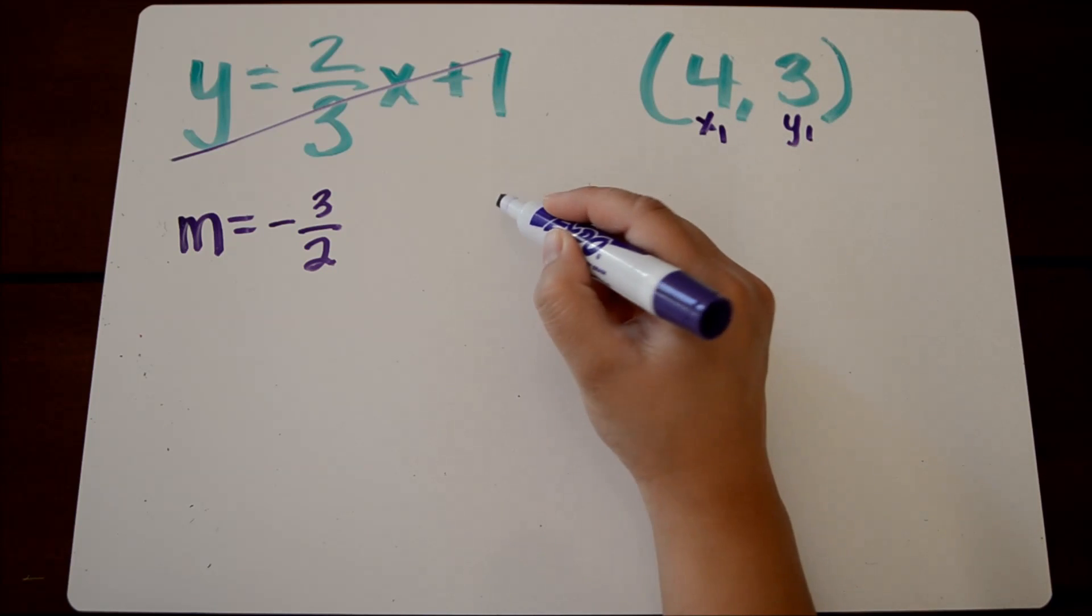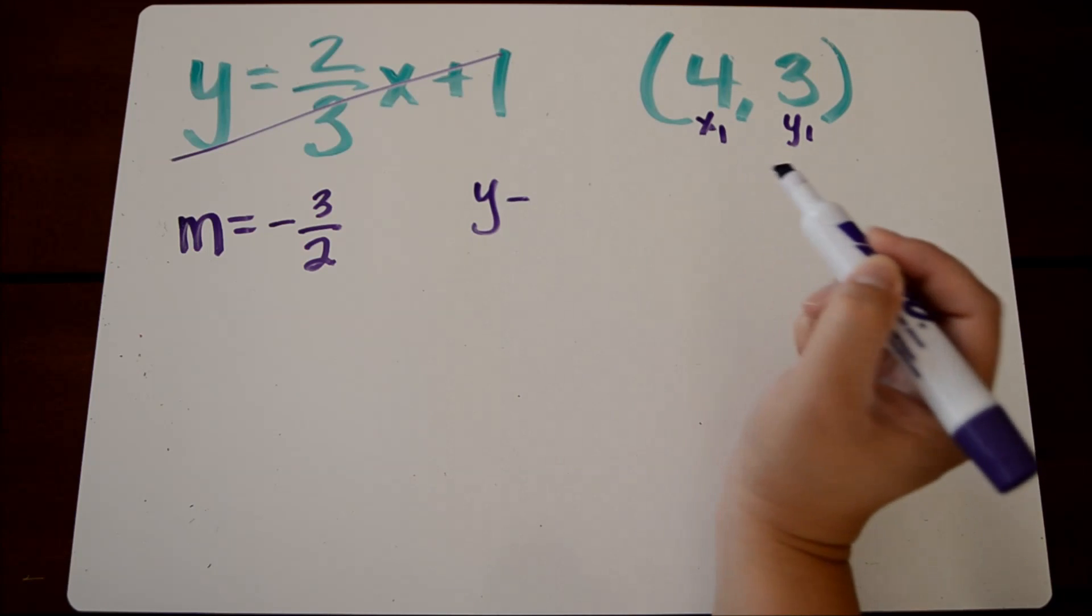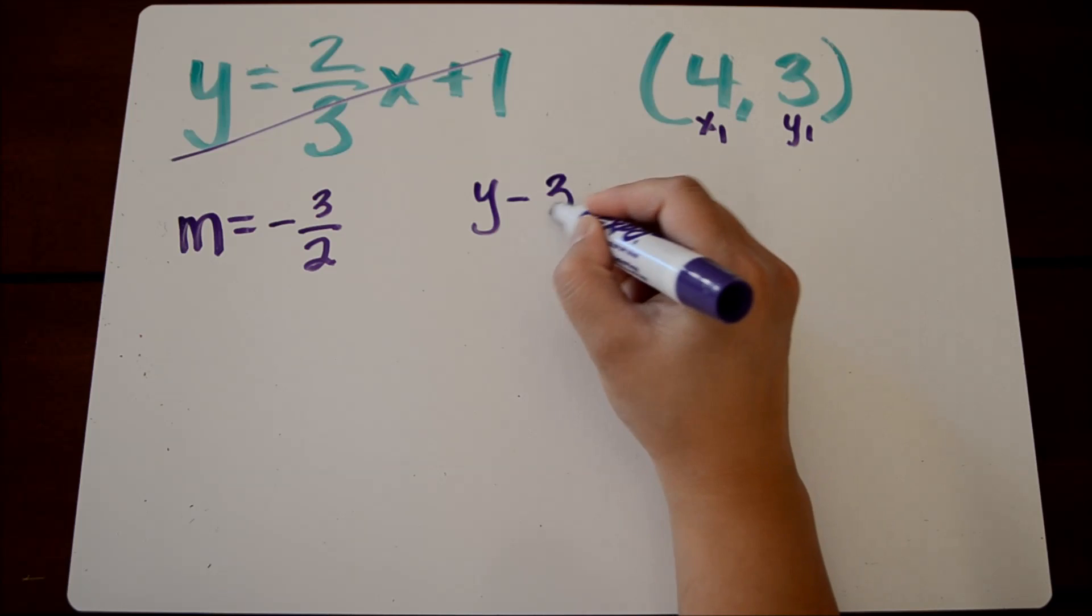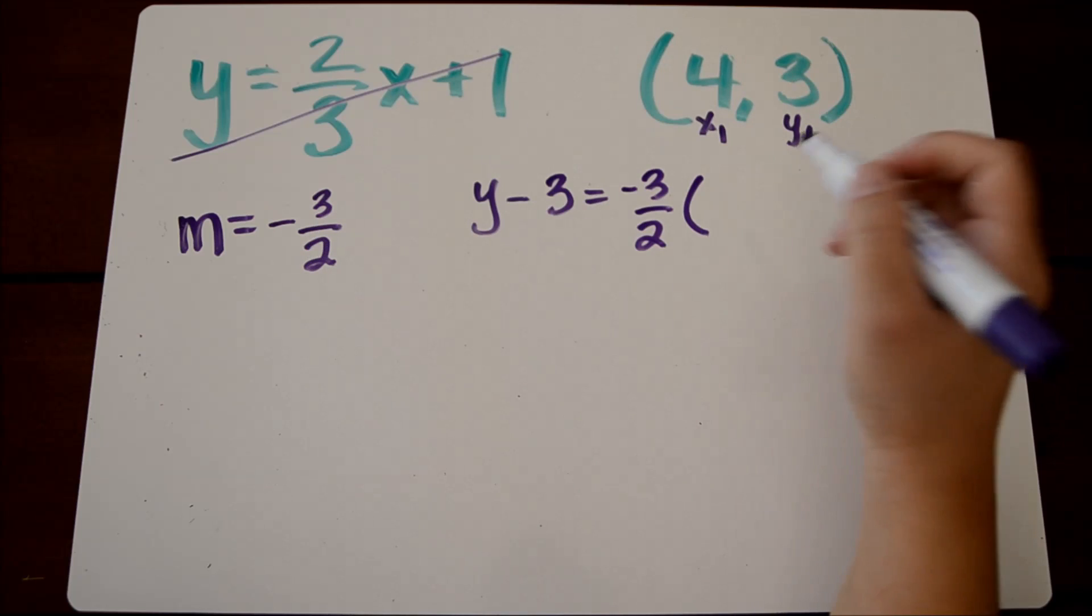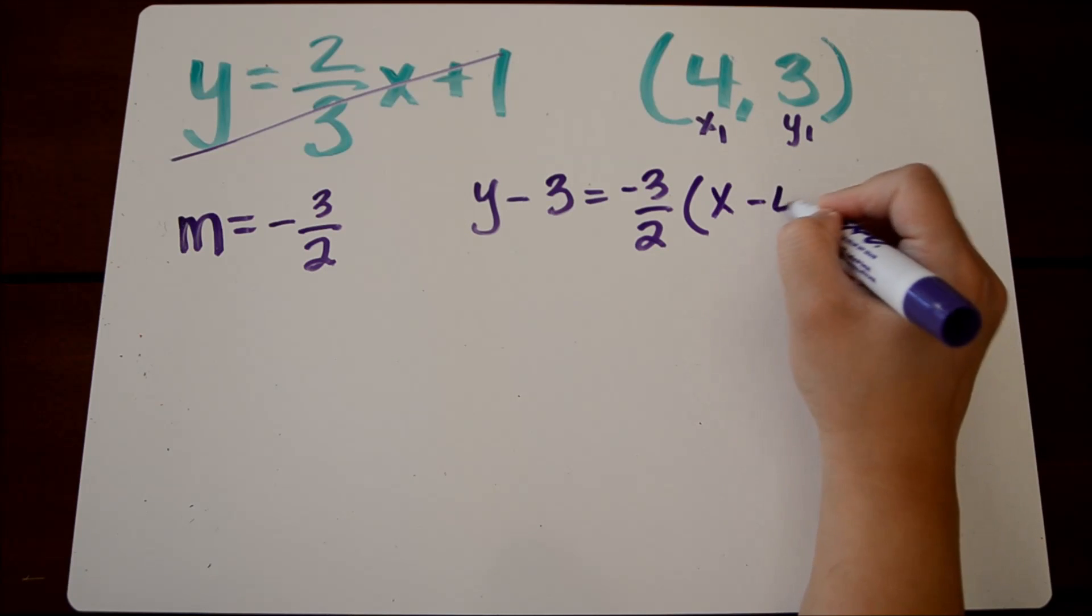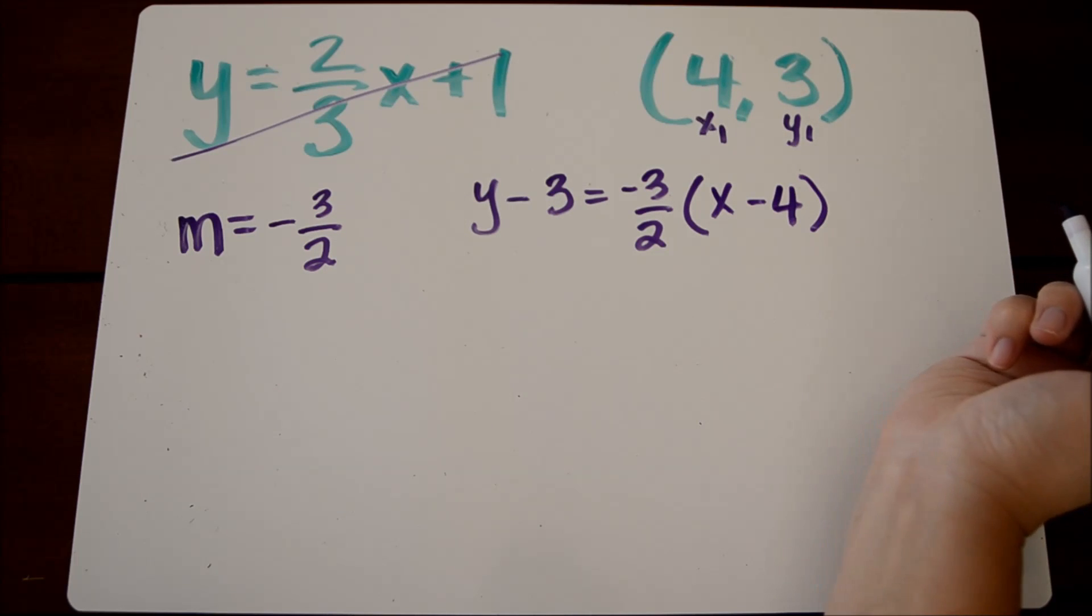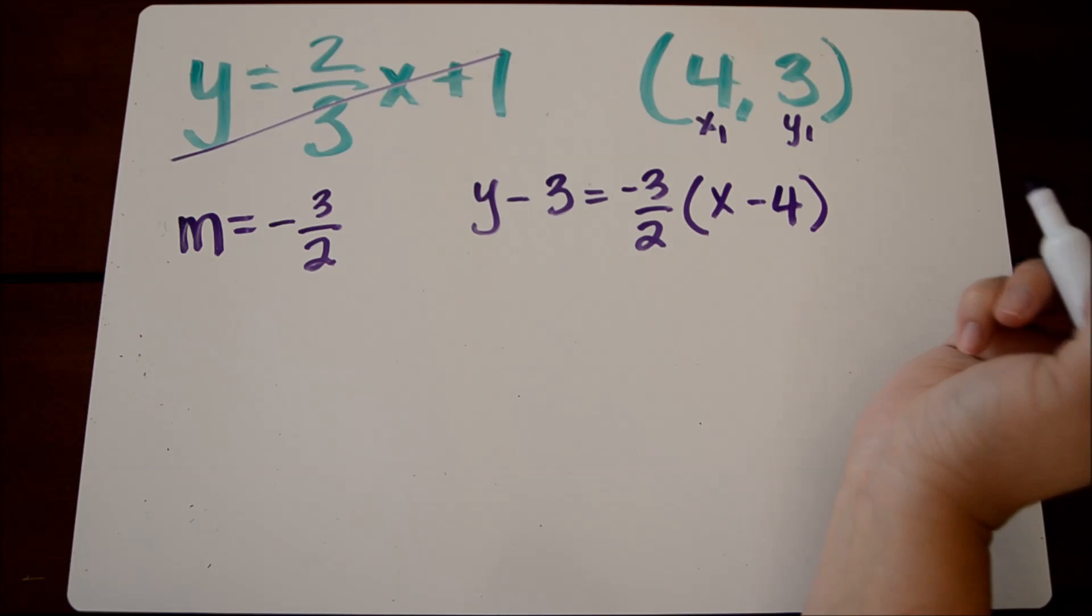So four is my x-one, three is my y-one. Substituting these values into point-slope form, we get y minus three equals negative three-halves times x minus four. If we're asked to write an equation in point-slope form, this would be our answer.